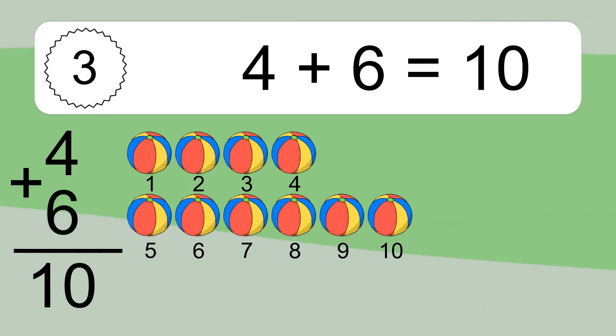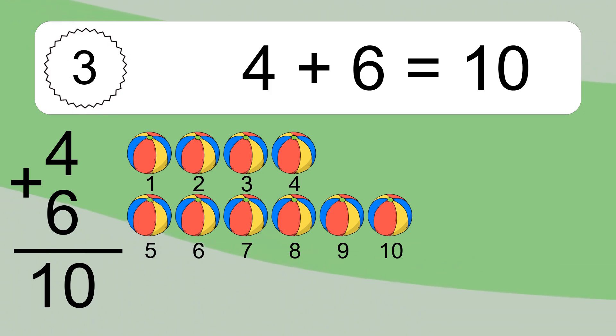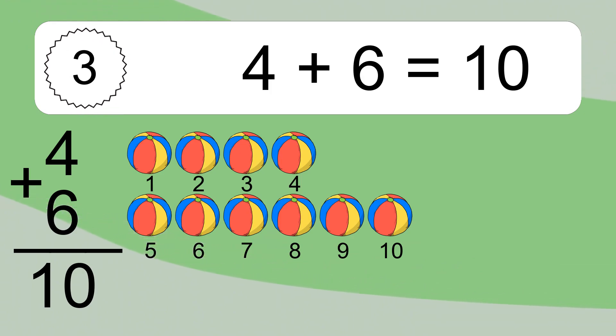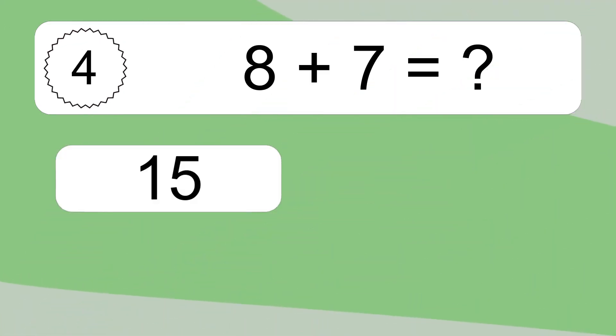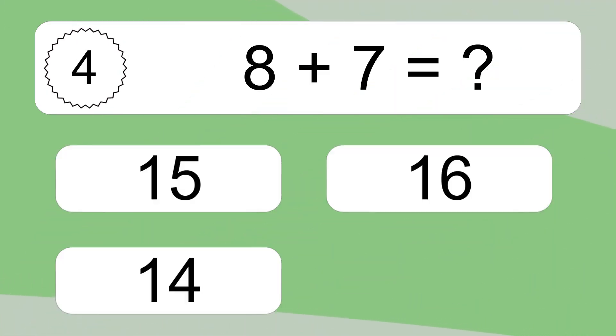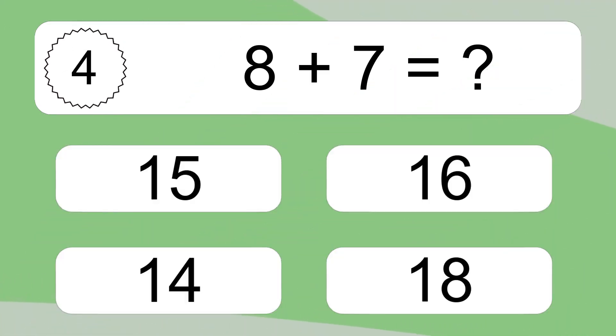Let's count it: 1, 2, 3, 4, 5, 6, 7, 8, 9, 10. 8 plus 7 equals what?